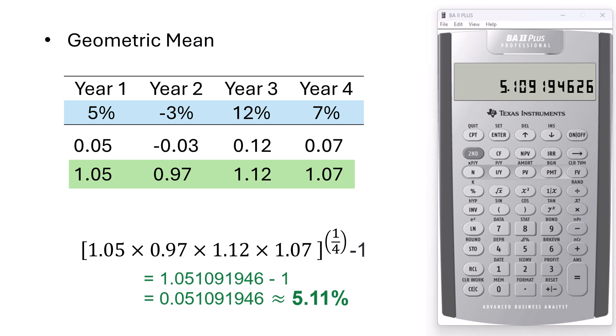The geometric mean gives us the average annual return over this 4 year period after accounting for compounding and is generally more accurate for investment returns than the simple arithmetic mean.